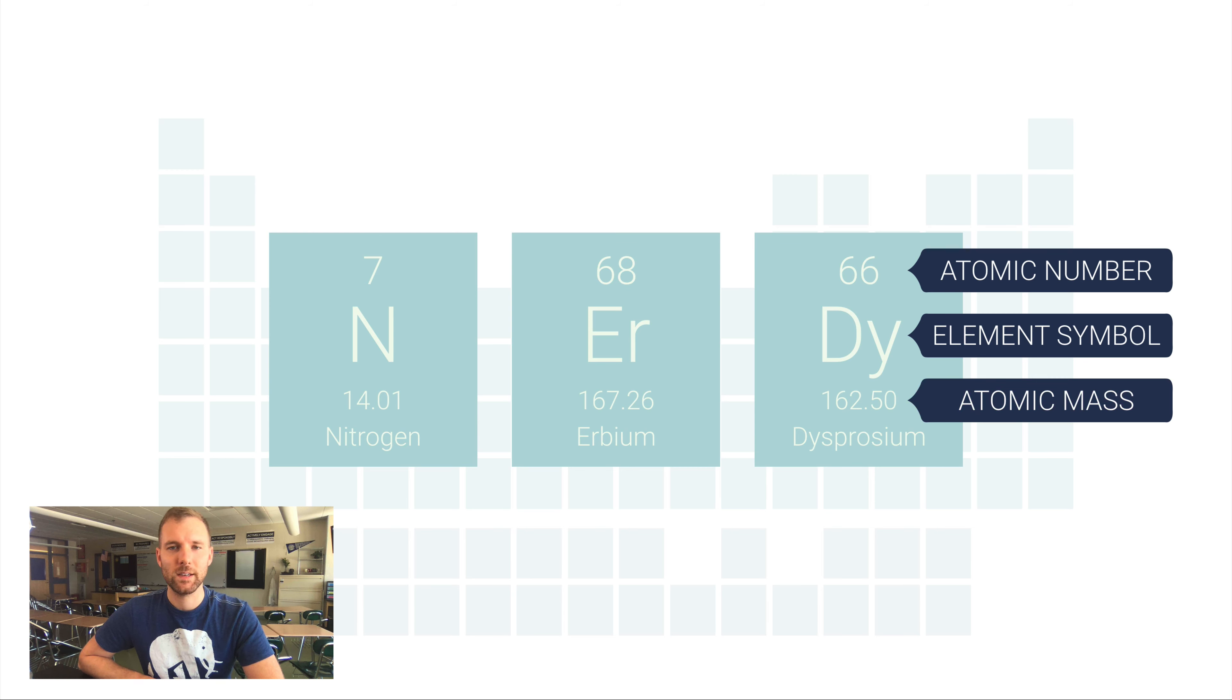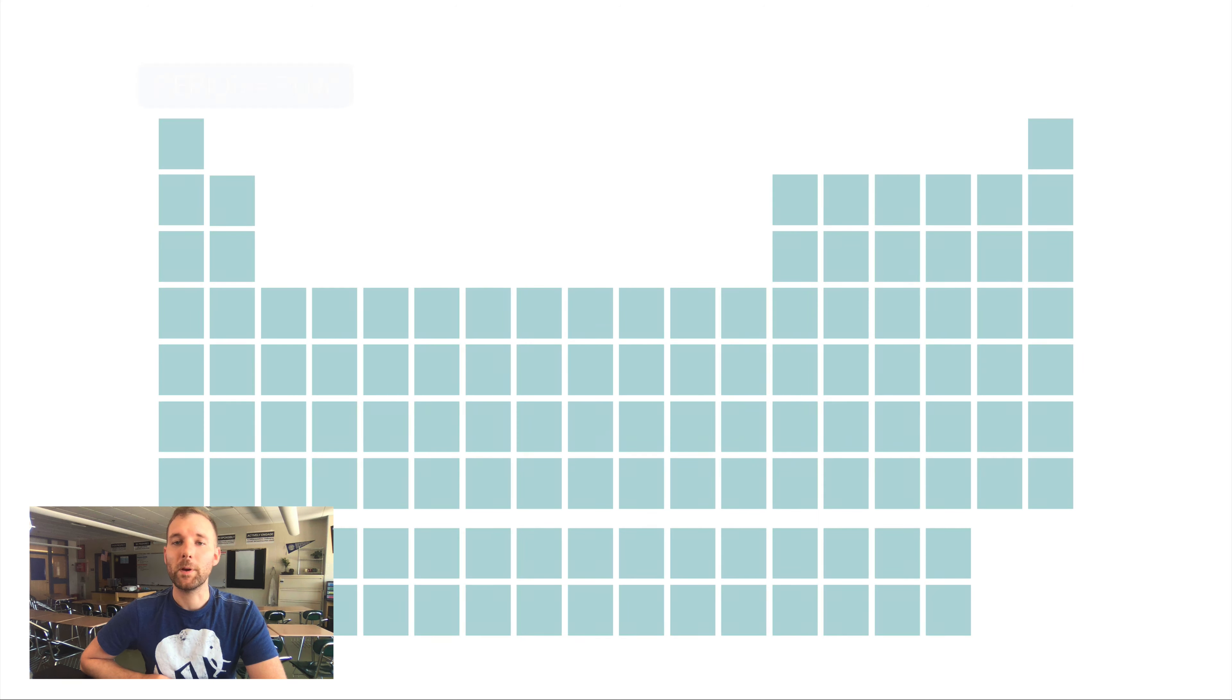And then if you're lucky on a periodic table, they'll give you the element name, but that's not always included. It is on ours in our class, but going forward that's kind of a little bit of a luxury to be honest. So it's good to know the name and the symbol because they are somewhat interchangeable in the periodic table.